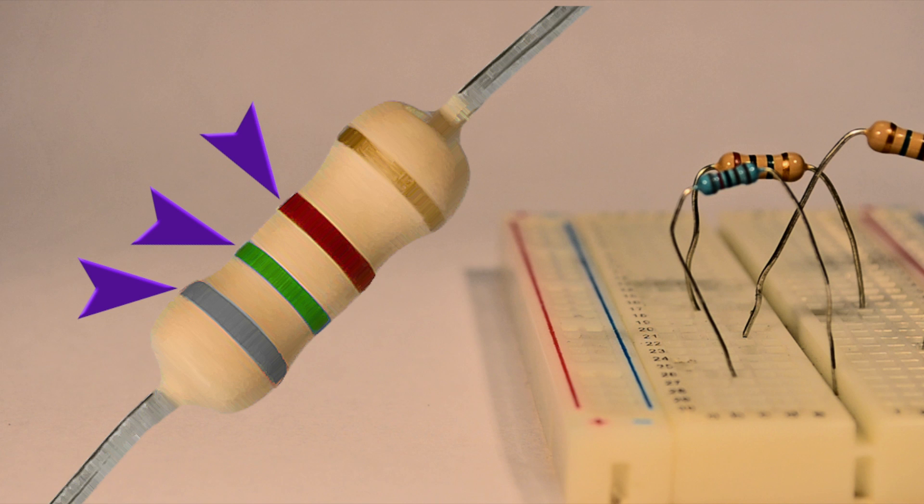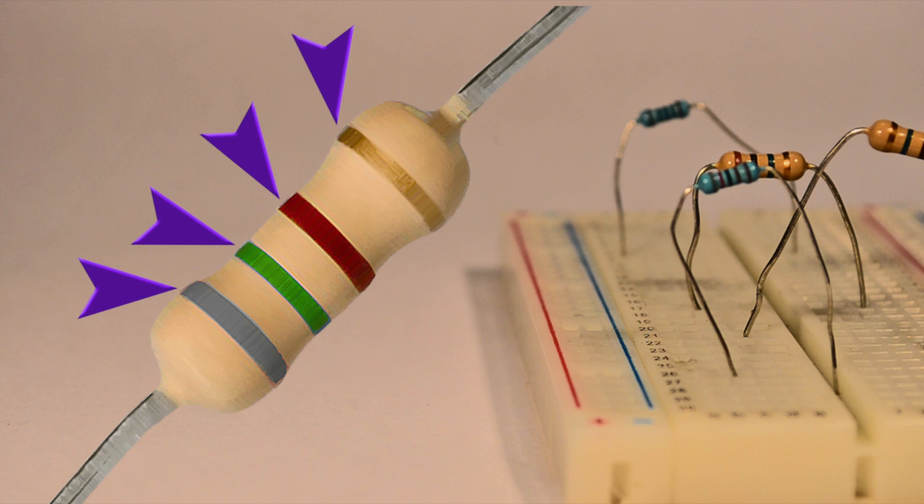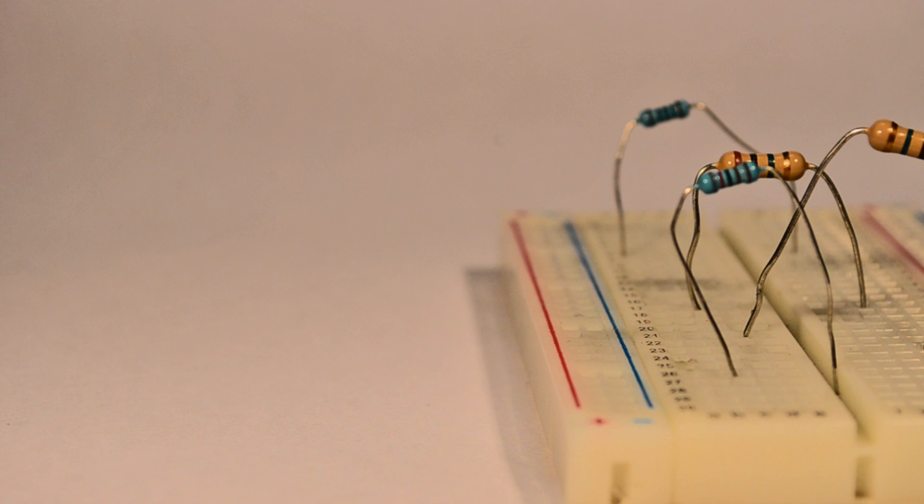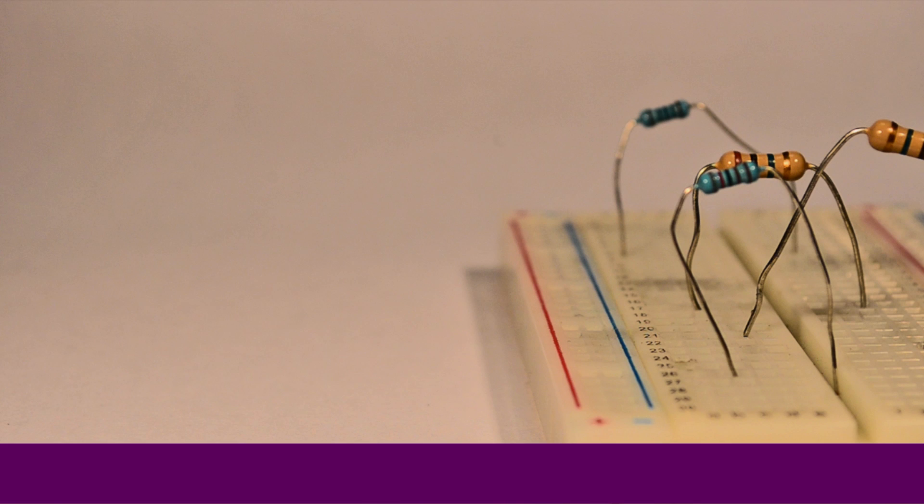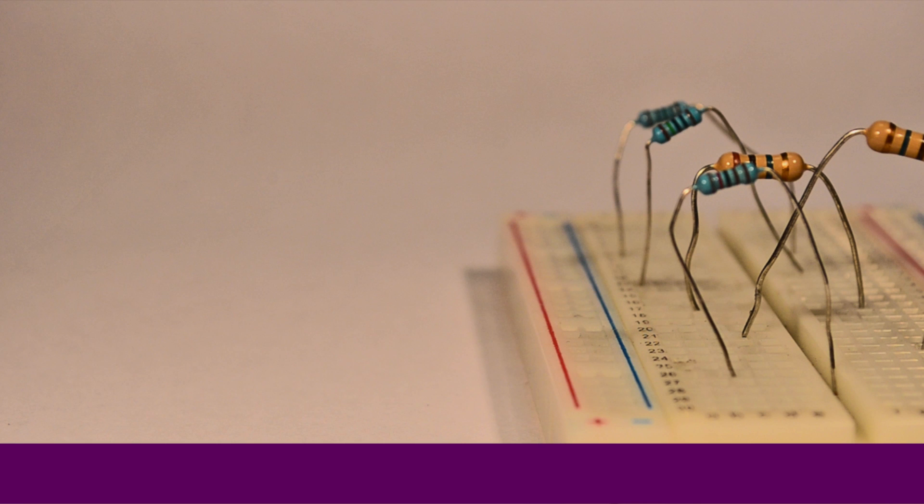These colored bands can be used to specifically identify the resistance value which is measured in what are called ohms. Check out the link below for an instructional video on reading resistance color codes. Apart from these fixed resistors,